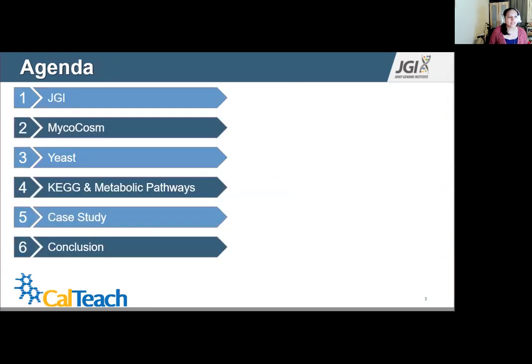Here's a bit of an agenda for today's walkthrough. I will begin by discussing what JGI is and their mission, and this is followed by a discussion of MycoCosm and what it is. I'll follow this with an introduction into yeast, which leads us into understanding what KEGG is and its utility for examining metabolic pathways. And this leads to our case study, which I will walk through on MycoCosm, and a conclusion to wrap up this tutorial.